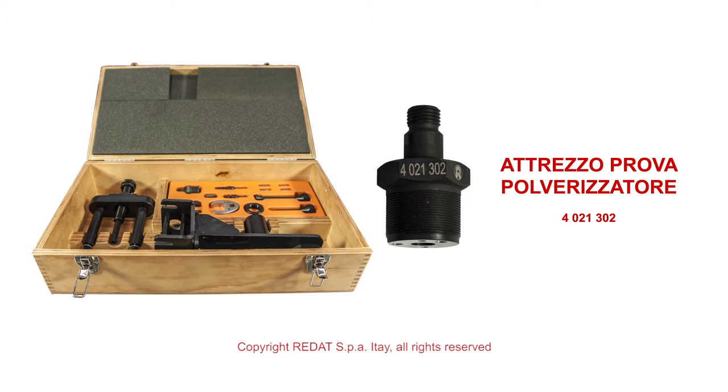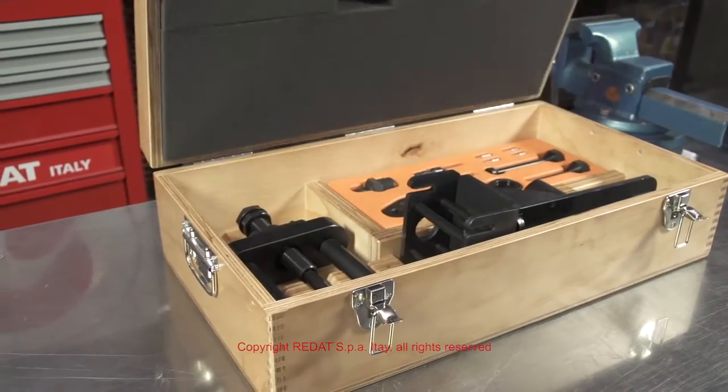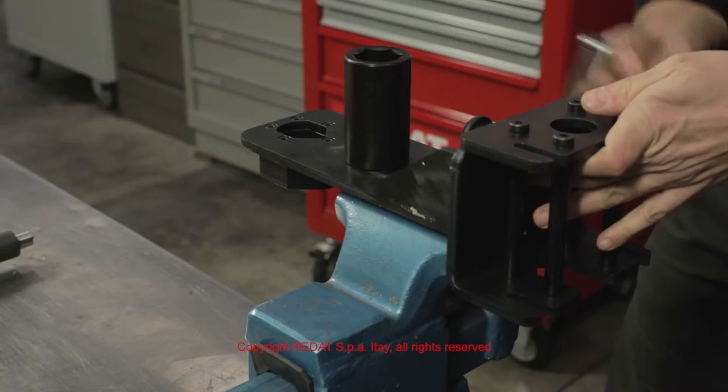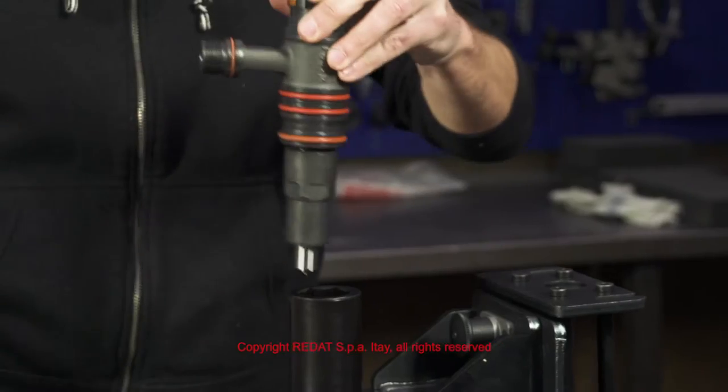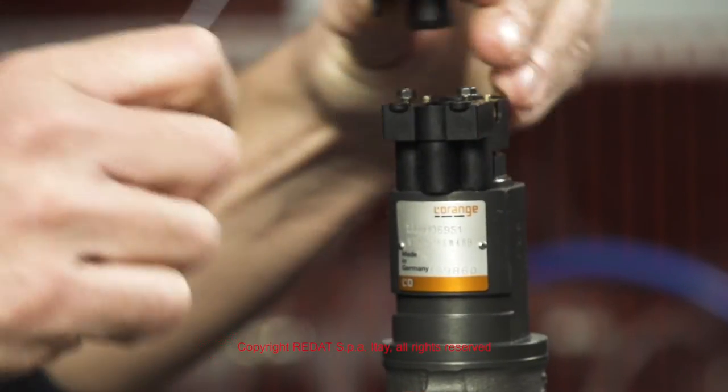We start by locking the 4021820 tool in the vise and inserting the L'Orange injector in the bush. We remove the plastic cover.